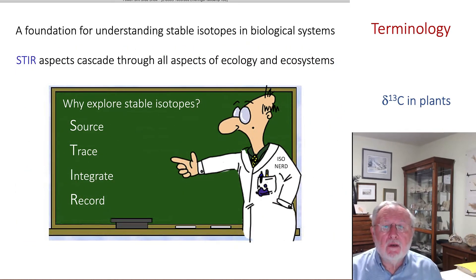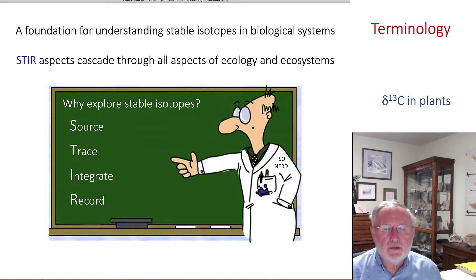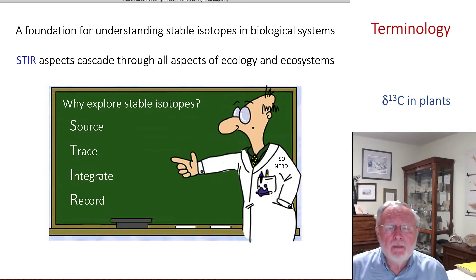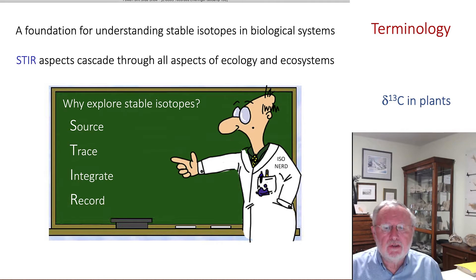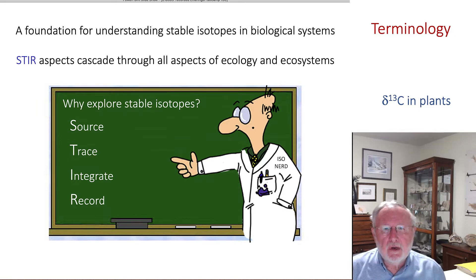A fundamental understanding of stabilized isotopes in biological systems is useful for four different reasons. I use the acronym STIR. We can use stabilized isotope analysis at natural abundance levels to source material, to trace materials or molecules through a biological or ecological system, and because these fractionation events take place continuously, there is an integration of metabolic activity over time.